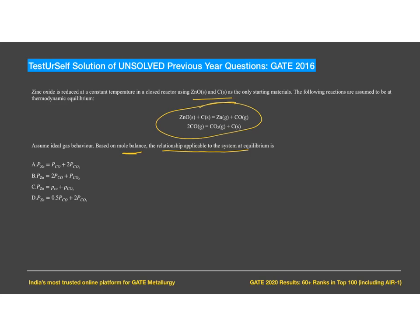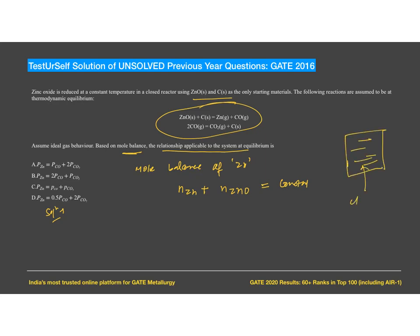Let's start with mole balance of zinc. One mole of zinc is present in zinc itself and one mole of zinc is present in zinc oxide. This will be constant because reactions are occurring in a closed reactor — moles of each element remain constant.